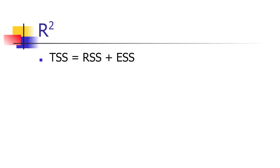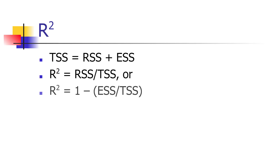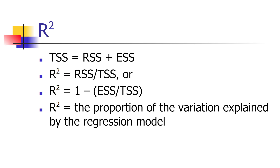Since the total sum of squares equals the regression sum of squares plus the error sum of squares, we define R-squared to be the ratio of the regression sum of squares to the total sum of squares. Or, with a little algebra, we can write that as 1 minus the error sum of squares over the total sum of squares. R-squared has the interpretation of being the proportion of the total variation in the dependent variable that can be explained by the regression model.